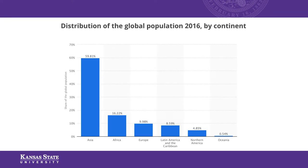The distribution of global population is very different around the globe, divided by continent. Over half of the people on the planet live in Asia — China, India, and Central Asia are vastly more populated than Europe, Africa, and North America. Only about 5% of the world's people actually live in the United States, Canada, and Mexico.